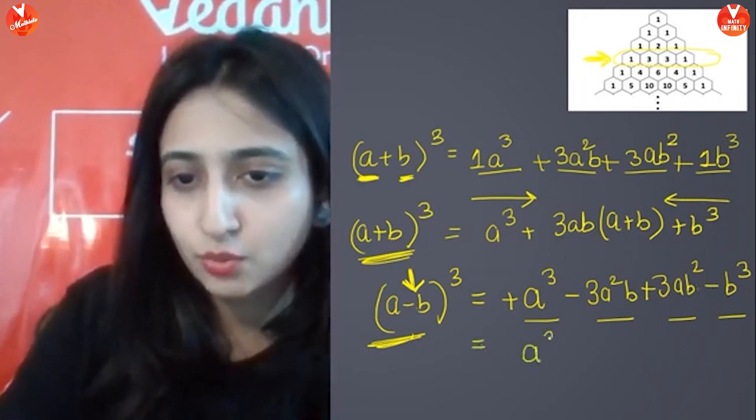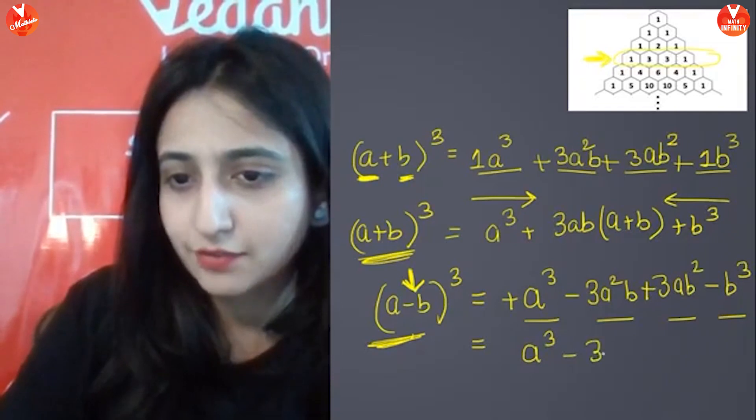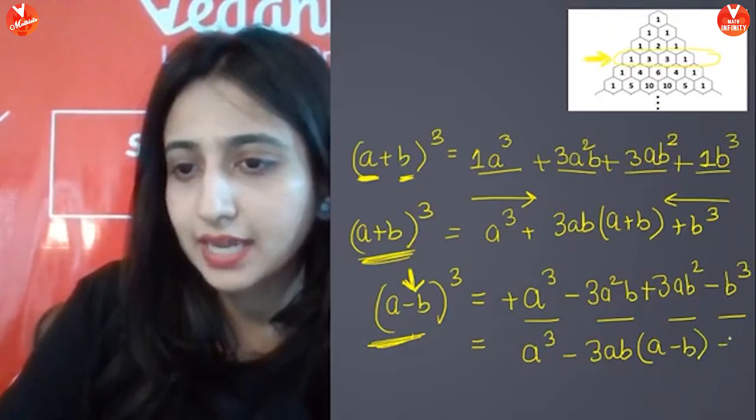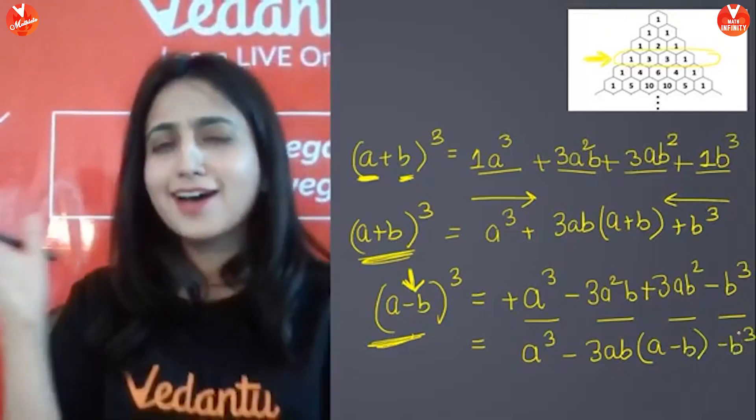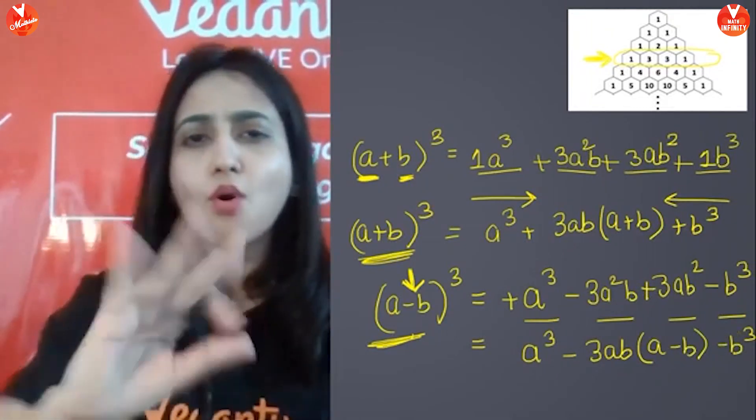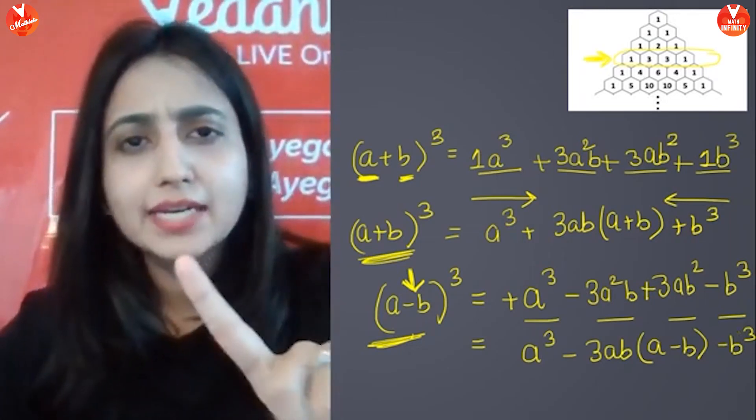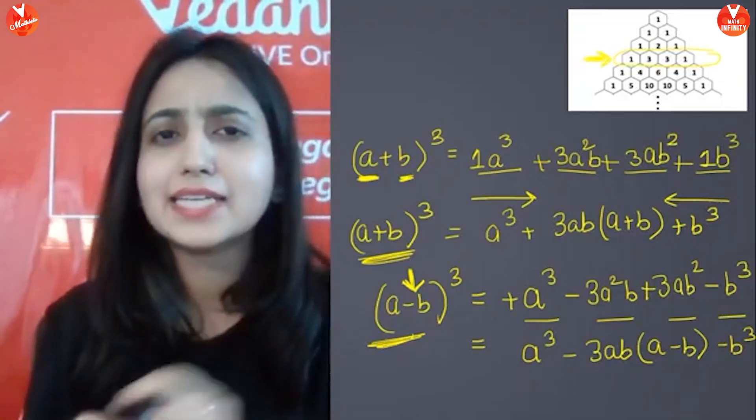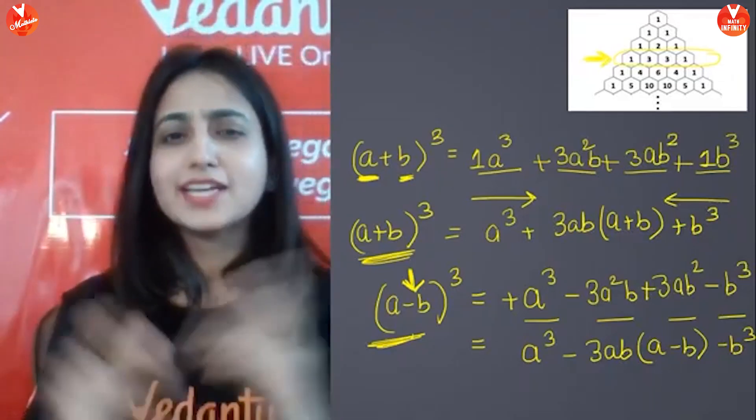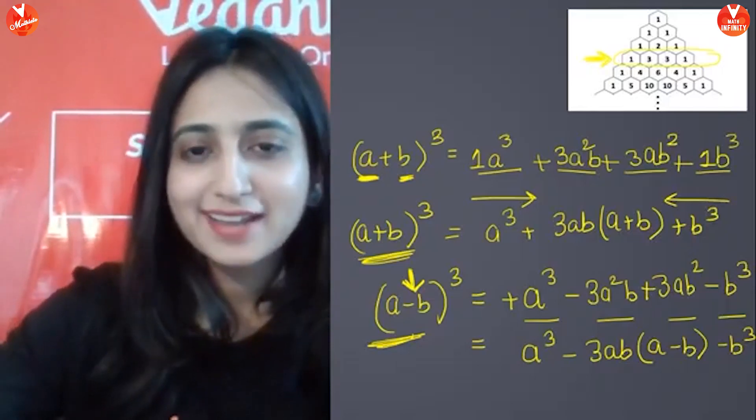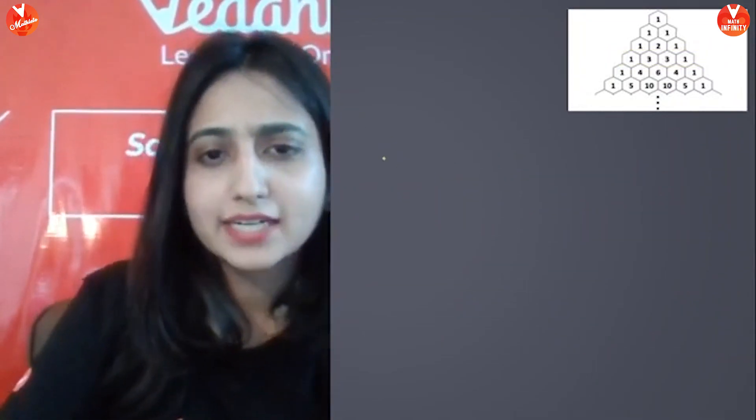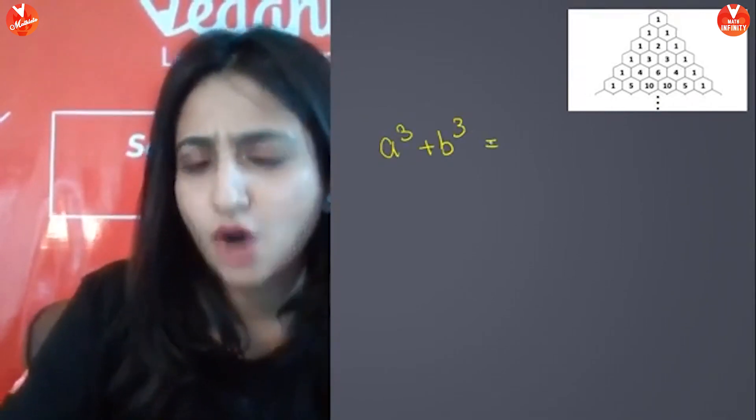Now, let's simplify it. A cube minus, if I take minus 3AB common, what do I get? I get A minus B in the bracket and minus B cube. Ta-da! Here goes your identity number 4. Very easy. You just need to derive one identity and you can pop to another identity within seconds. Easy? Two identities are still left. That is, A cube plus B cube. Let's see how to do this. For deriving this identity, I will be using the result of this identity. That is, A plus B whole cube.